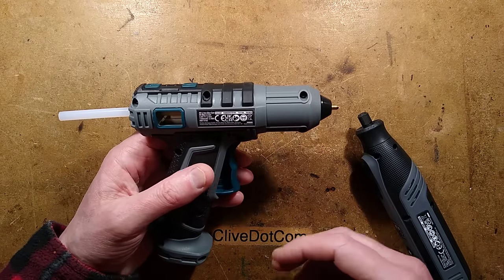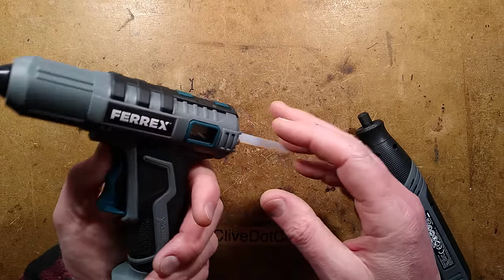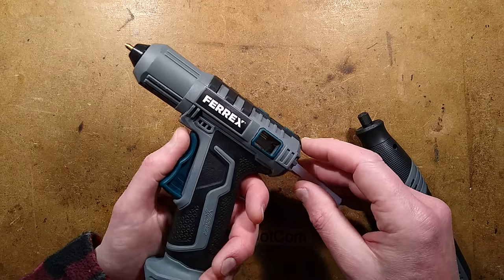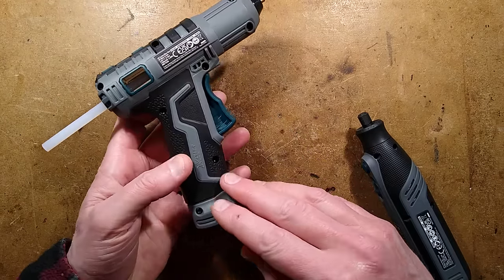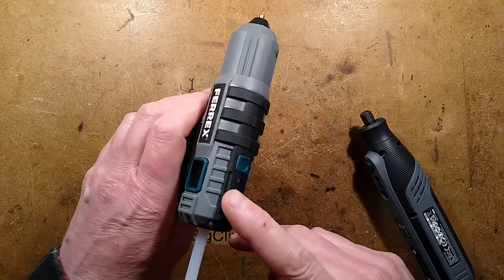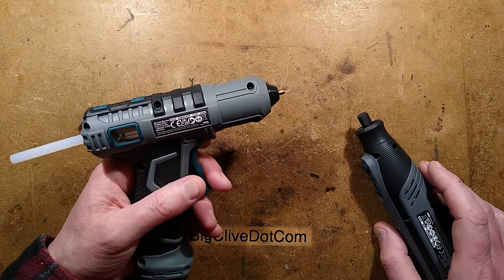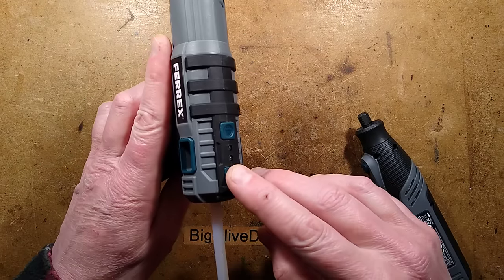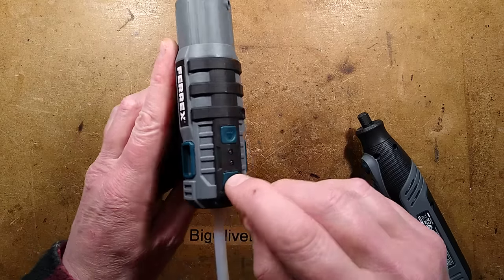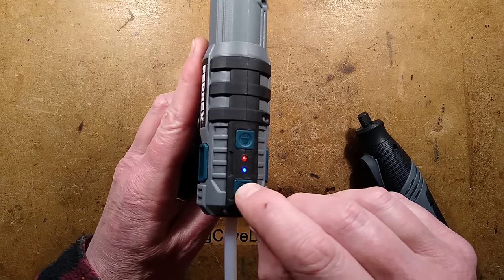This video almost didn't happen. This is an Aldi Ferex hot melt glue gun with a built-in lithium cell, so you can just basically turn it on and use it. Because it's quite easy to turn on, if you press this button at the back, hold it for a few seconds, it lights up and starts heating up.